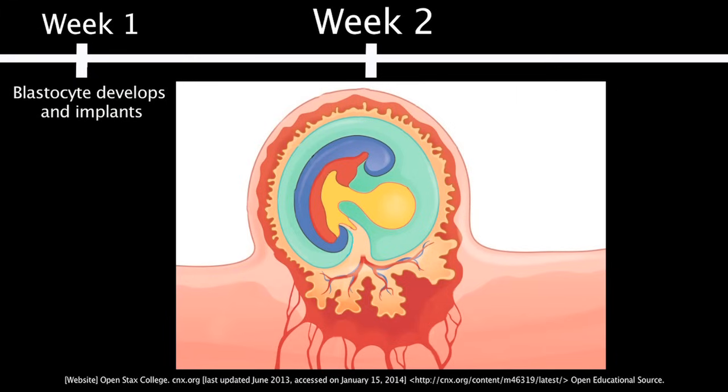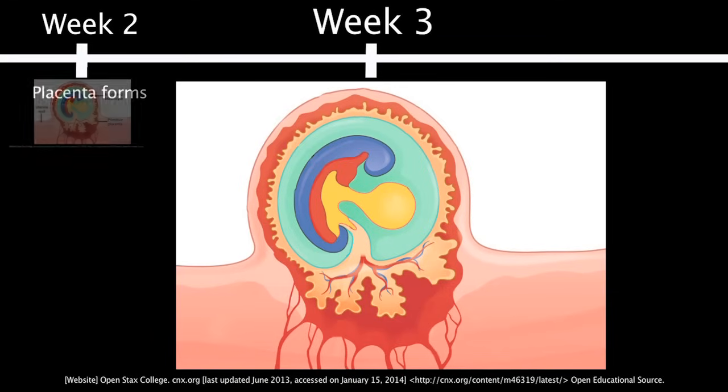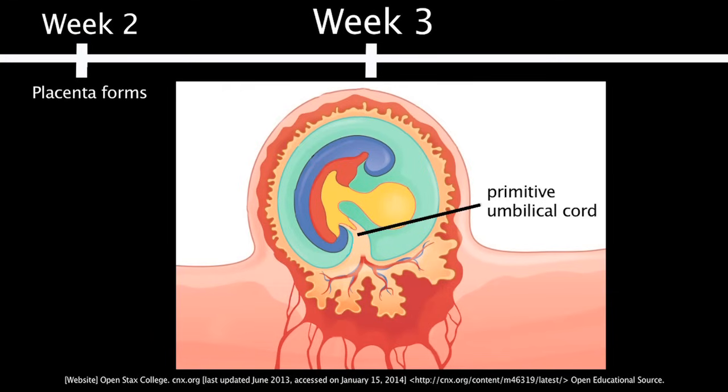During the second week of fetal life, the blastocyte implants deeper into the uterine wall and a primitive placenta begins to form. During the third week of fetal life, the primitive umbilical cord develops.